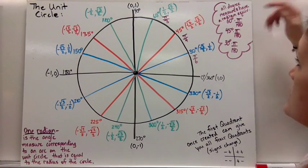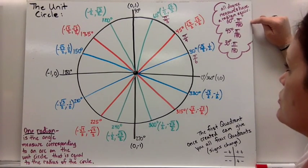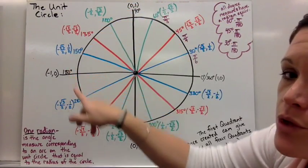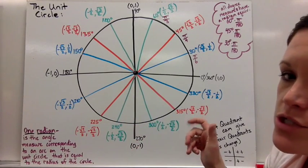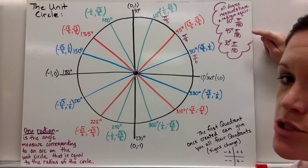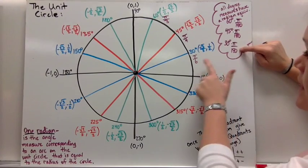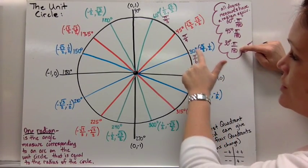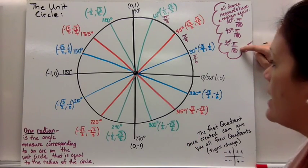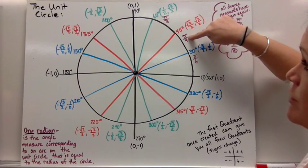One more thing that I did not put all the way around the circle just to not make it too overwhelming, is that all degree measures have a radian equivalent. So what I would do is go through, and I've started in the first quadrant. I want you to continue with the radian equivalent of each degree measure. Remember to convert degrees to radians, you multiply by pi over 180 and reduce. So 30 times pi over 180 is pi over 6. So 30 degrees and pi over 6 are the degree and radian equivalent of that angle.